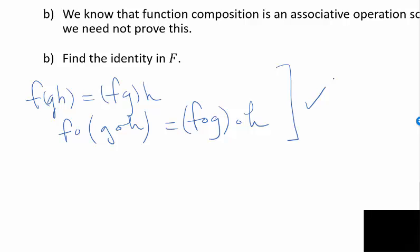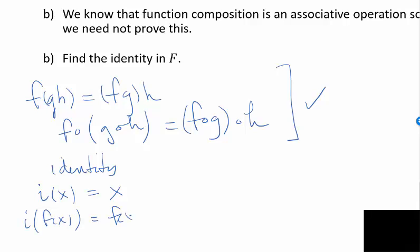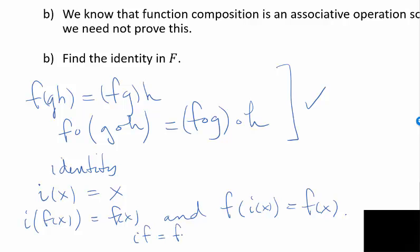For the identity, let i(x) = x be the identity function. We should show this is the identity: i(f(x)) = f(x), and f(i(x)) = f(x) since i(x) = x. So when we compose i with any function f in F, we get the function back. In other words, i∘f = f∘i = f for all f in F.